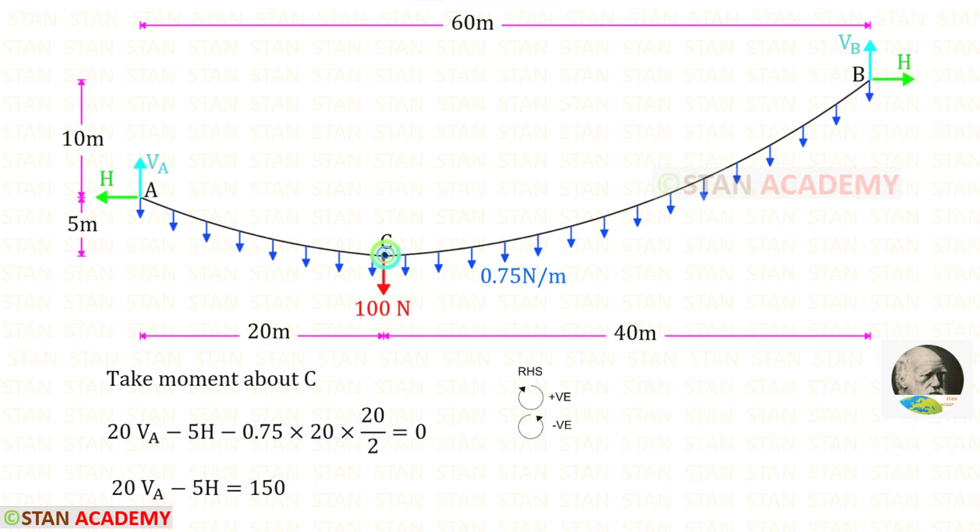We know that at point C also there will be no movement. Let us take moment about C. VA is acting in the clockwise direction so it will be positive and the distance is 20, so 20VA. The horizontal thrust is acting in the anti-clockwise direction so it will be negative and the distance is 5.